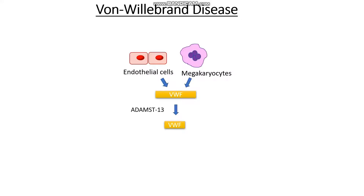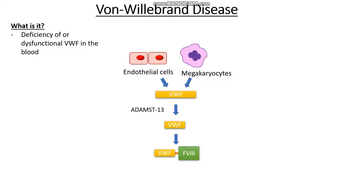After being cleaved, the newly cleaved von Willebrand factor binds to factor VIII in circulation and circulates around the body to sites where it's needed to patch up holes. Von Willebrand's disease refers to a lack of, reduced levels of, or dysfunctional von Willebrand factor in our blood. This is the most common cause of impaired clotting and it is often inherited in an autosomal dominant pattern.